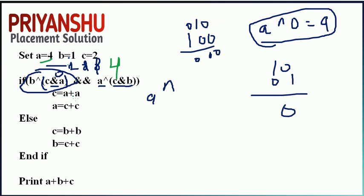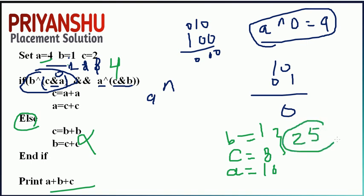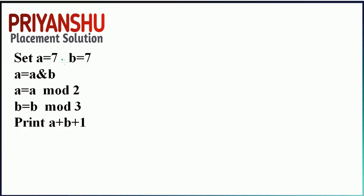Since condition is true, c equals a plus a equals 4 plus 4 equals 8. Then a equals c plus c equals 8 plus 8 equals 16. The else part is not executed. So a plus b plus c equals 16 plus 1 plus 8 equals 25. The answer is 25.